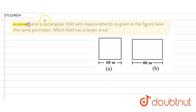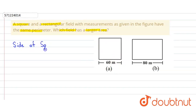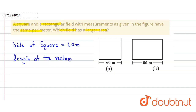In the given question, a square and a rectangular field with the measurements as given in the figure have the same perimeter. We have to find which field has a larger area. The side of the square is equal to 60 meters, and the length of the rectangle is equal to 80 meters.